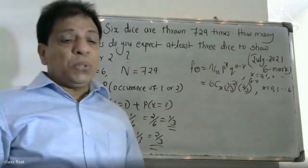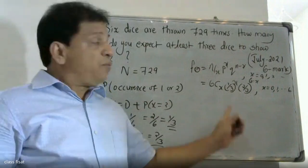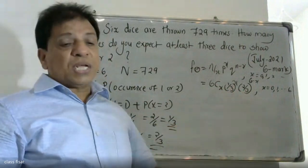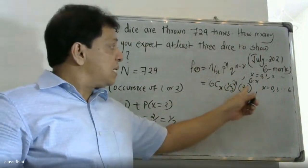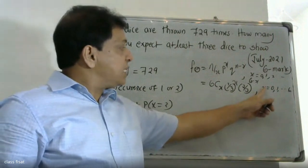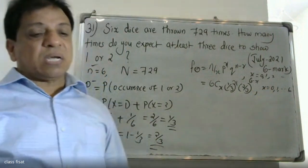The probability mass function is: f(X) = 6CX × (1/3)^X × (2/3)^(6 minus X), where X equals 0, 1, 2, etc.